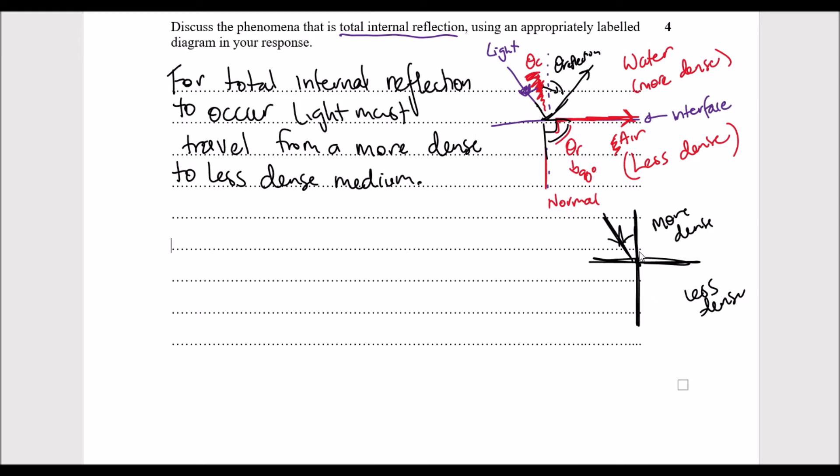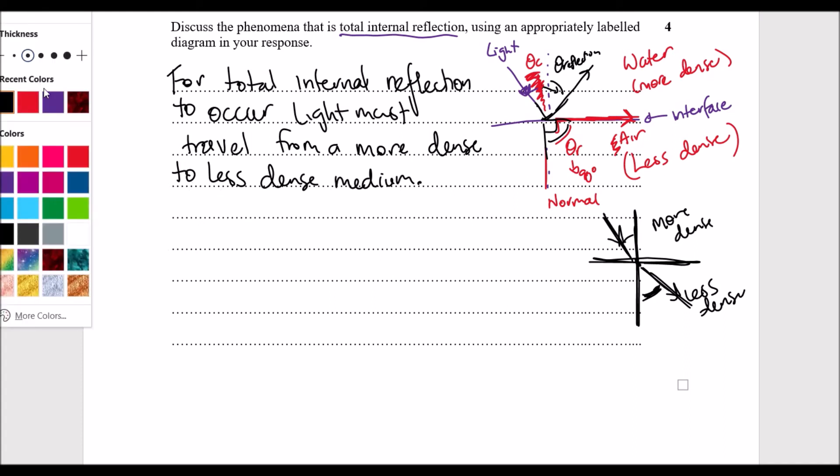So if it's coming at this angle here, the ray might come out here, so further away from the normal line that we have here. So let's just quickly jot that down, change color.